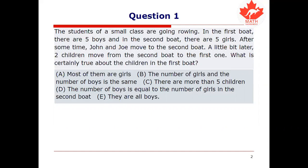Is it that most of them are girls? Is it that the number of girls and the number of boys is the same in the first boat? Is it that there are more than five children in the first boat? Is it that the number of boys in the first boat is equal to the number of girls in the second boat? Or is it that they're all boys?